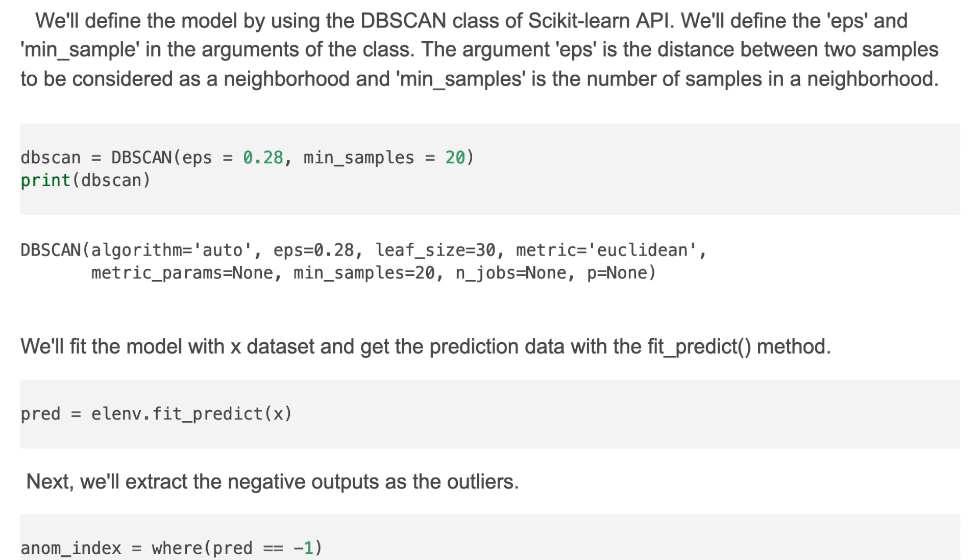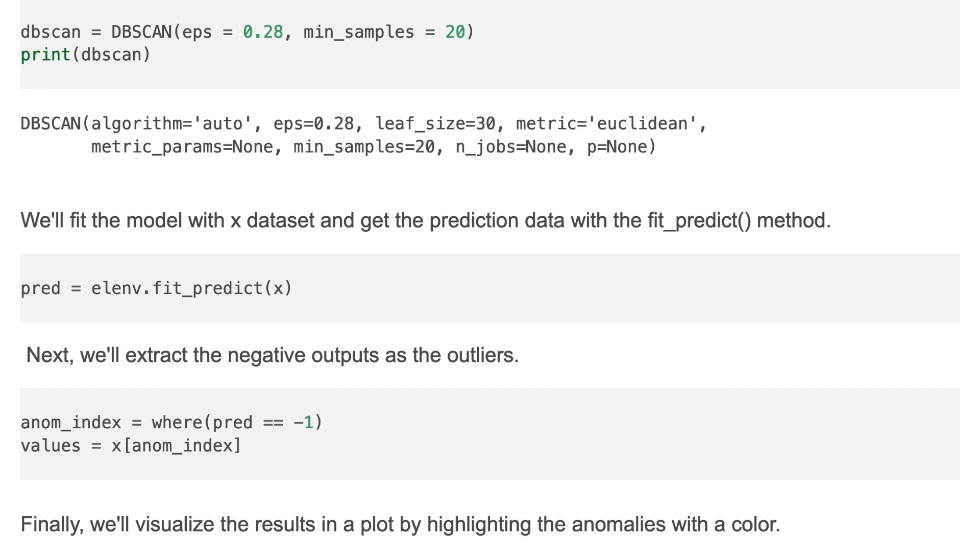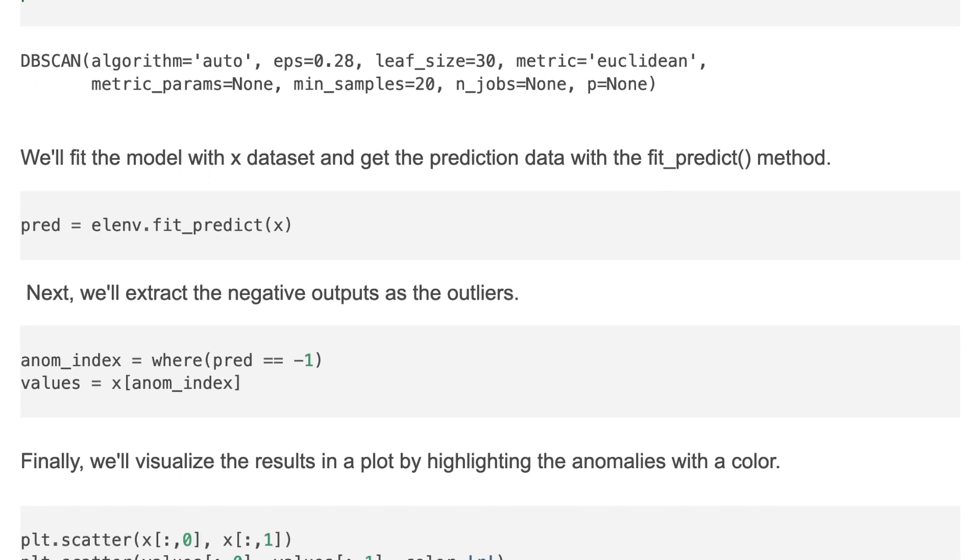Next, we'll fit the model with x dataset and get prediction data with fit_predict method. Then we'll extract the negative outputs as outliers. And we'll find out the indexes of those values and those elements and their values.